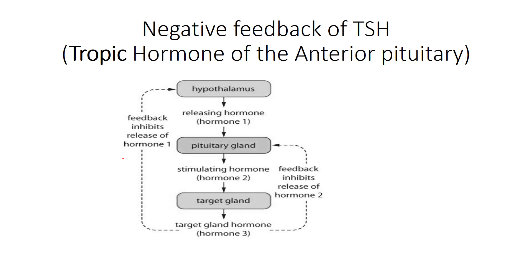Let's take an example of something that is a tropic hormone, and also look at negative feedback. In this case we're going to look at negative feedback of TSH. This is something you'll address in the next topic, but we're going over it now to show both negative feedback and the tropic hormone concept. The hypothalamus sends a releasing hormone (RH) to the anterior pituitary. The anterior pituitary is part of the endocrine system because it requires the hypothalamus to send a releasing hormone to initiate it to release TSH.